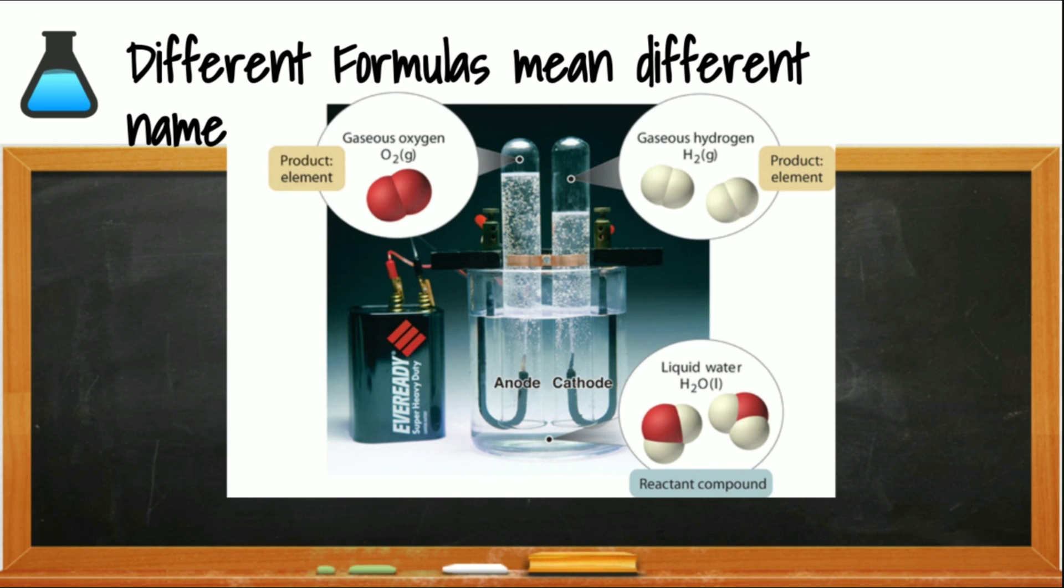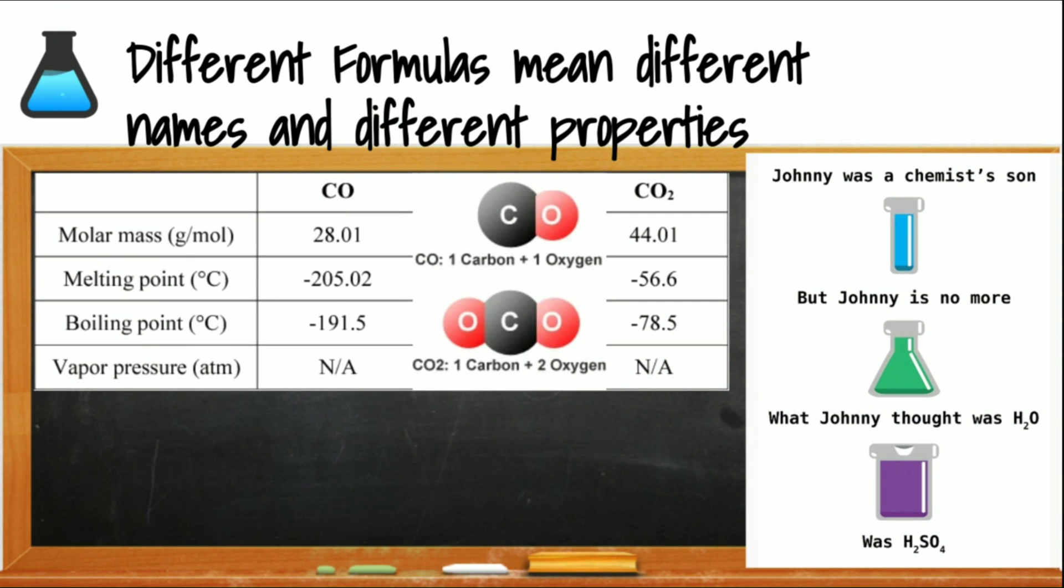The properties of the elements are not related to the property of the compound. This is an apparatus where we're using electricity to break the bonds that hold hydrogen and oxygen in the compound water and we're producing the gas, hydrogen and oxygen. Other examples are that whenever you change the formula, you always change the name and you change the property in a compound.